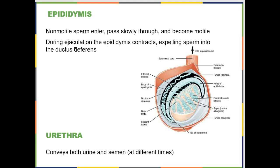Also within the scrotal sac, next to the testes, is the epididymis. The sperm produced in the seminiferous tubules are morphologically mature but not physiologically mature — they do not become motile or able to swim until they spend some time in the epididymis. So we have the testes for sperm production and the epididymis for sperm maturation.